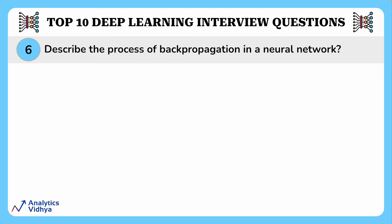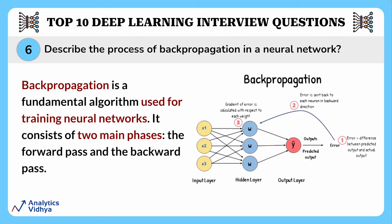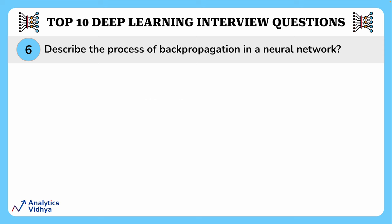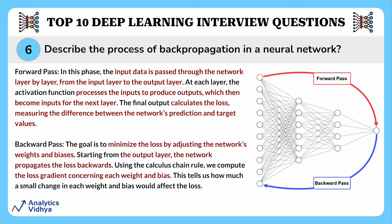The next question asks us to define the process of back propagation. Back propagation is a fundamental algorithm used to train neural networks — like adjusting how to learn from your mistakes. When you make a mistake, you figure out how much you were off by and then go back to tweak your understanding, improving performance over time. It consists of two main phases: the forward pass and the backward pass.